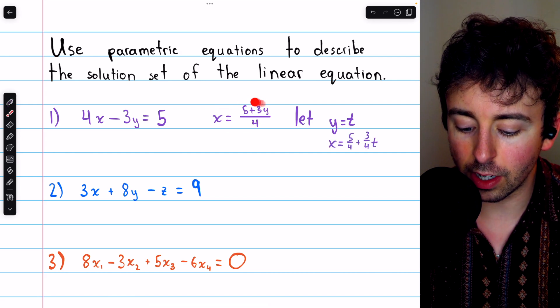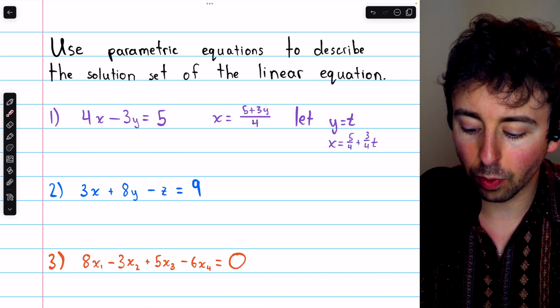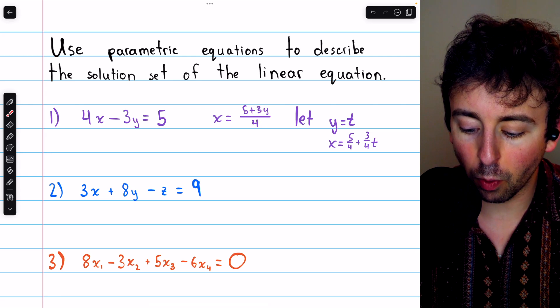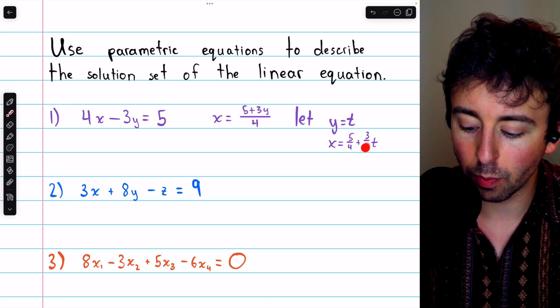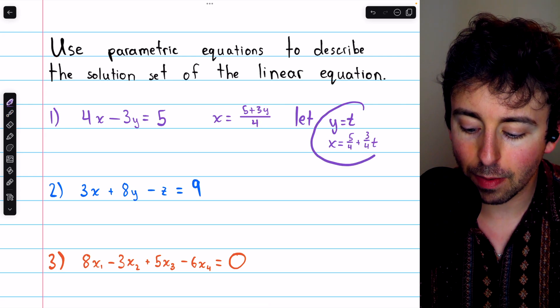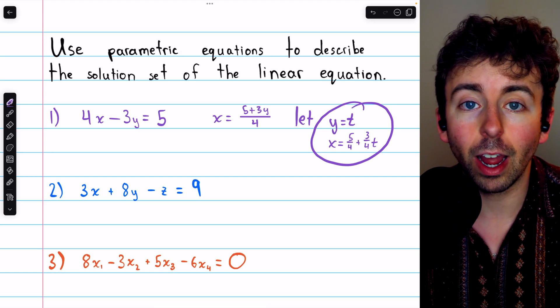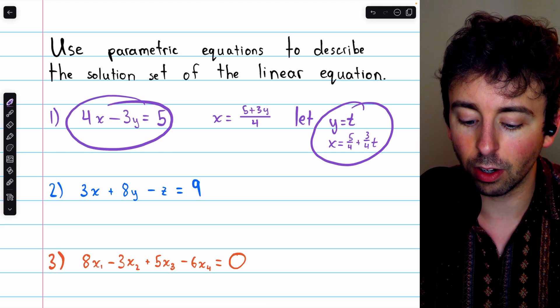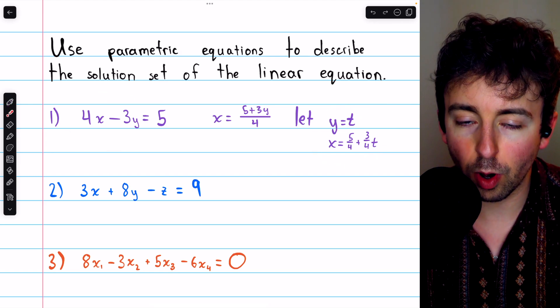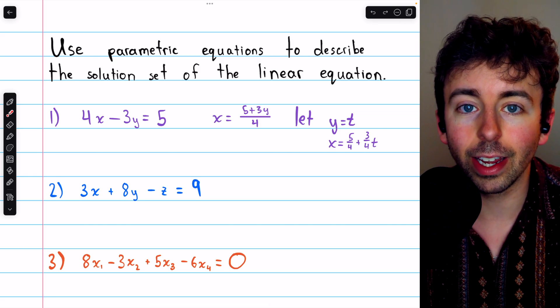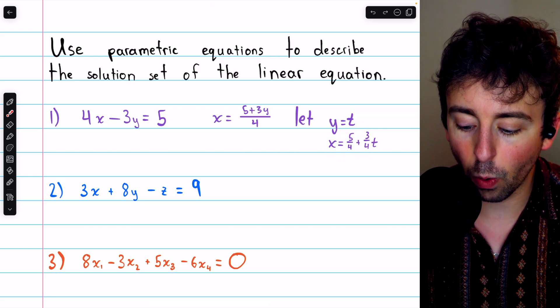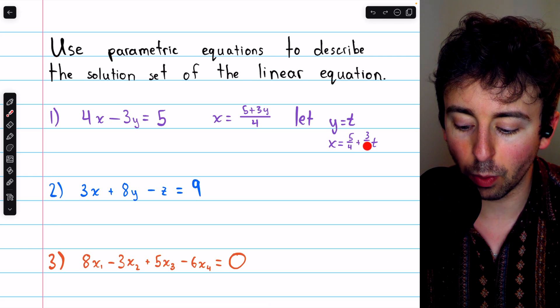Then, putting this equation in terms of t, we have 5 over 4 and 3 over 4y, which is the same as 3 over 4t. And so these are the parametric equations that describe the solution set for this equation. y is an arbitrary parameter t. It's free to be whatever it likes. And x is calculated accordingly, 5 fourths plus 3 fourths t.